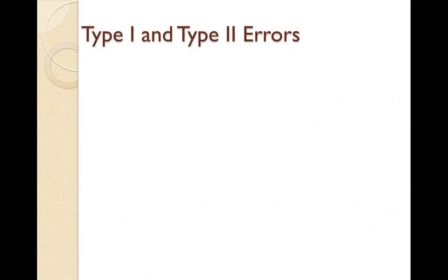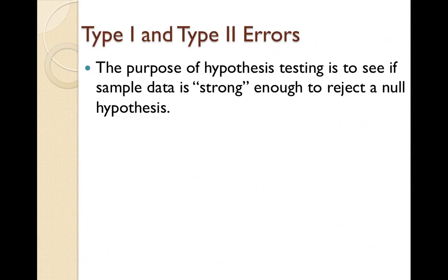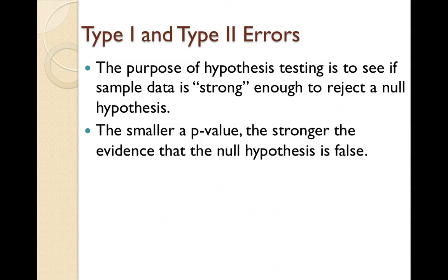I discussed type 1 and type 2 errors in the chapter 10 lectures, so here's a recap. The purpose of hypothesis testing is to see if our sample data is strong enough to reject a null hypothesis. We know whether we have strong sample data because our p-value is small — the smaller the p-value, the stronger the evidence that the null hypothesis is false.